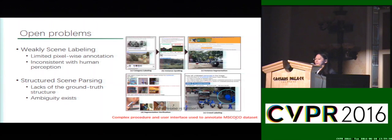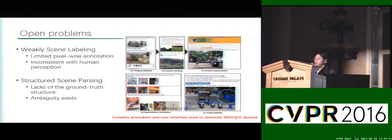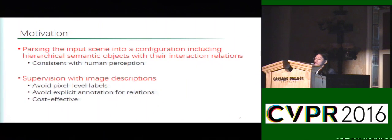First, for scene labeling, extensive pixel-wise annotation is usually required for supervised model training. For example, on the MS-COCO dataset, they developed multiple complex procedures and user interfaces for annotators to label images. For structured scene understanding, coarse annotation is more difficult to collect, and some semantic ambiguities for annotations also exist.